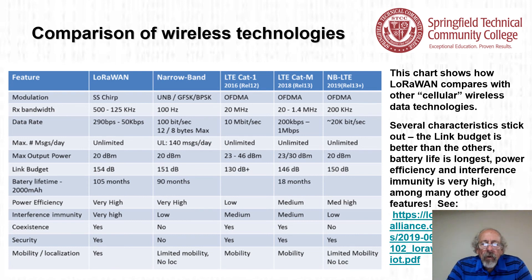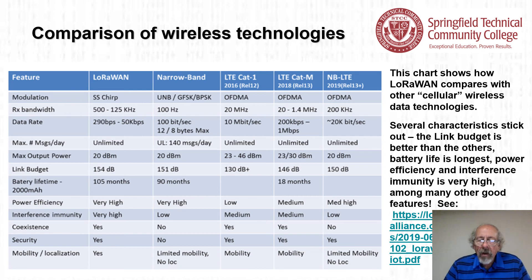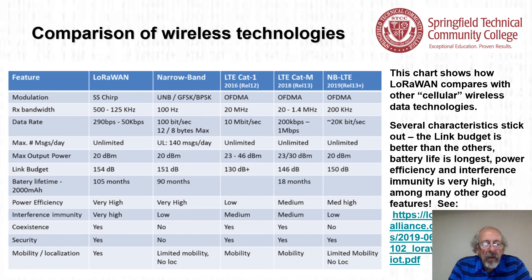A comparison chart shows how LoRaWAN compares with other cellular wireless data technologies. Several characteristics stand out: the link budget is better than the others, battery life is longest, and power efficiency and interference immunity are very high, among many other good features. There is a link to the LoRa Alliance that discusses this further.